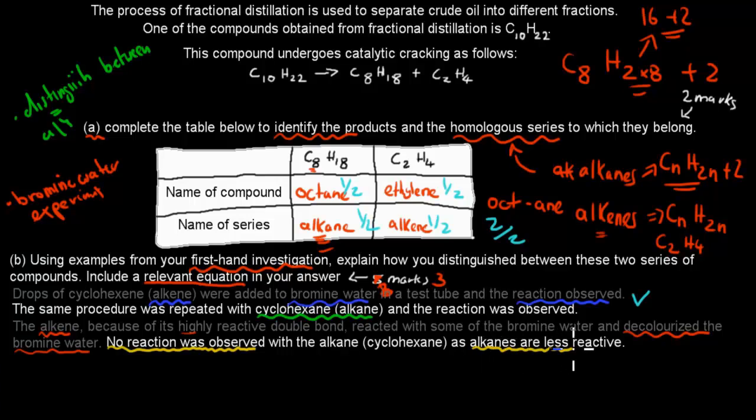As alkanes are less reactive. So that's how we could differentiate between alkanes and alkenes, by using that bromide water. We saw anything that decolorized the water would have been the alkene. Anything that did nothing to the actual solution would have been the alkane. And then it also said include relevant equations.